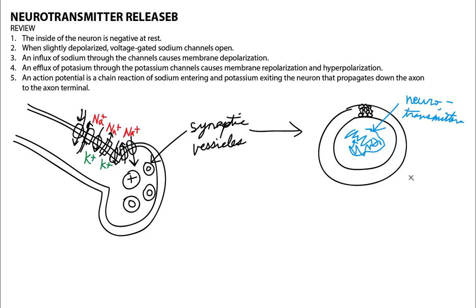Neurotransmitters are special chemical substances that neurons use to communicate. So going back over here again, what we have is our synaptic vesicles that are filled with neurotransmitters. It's another important thing down in the axon terminal.